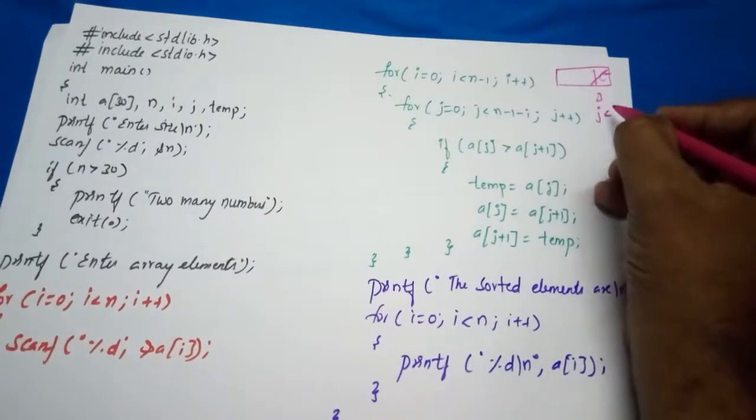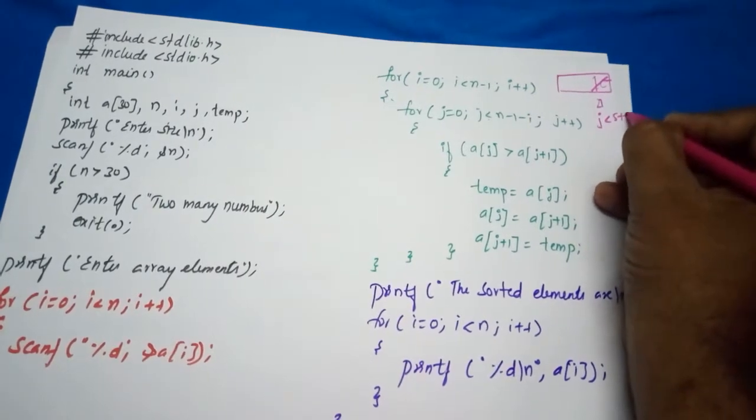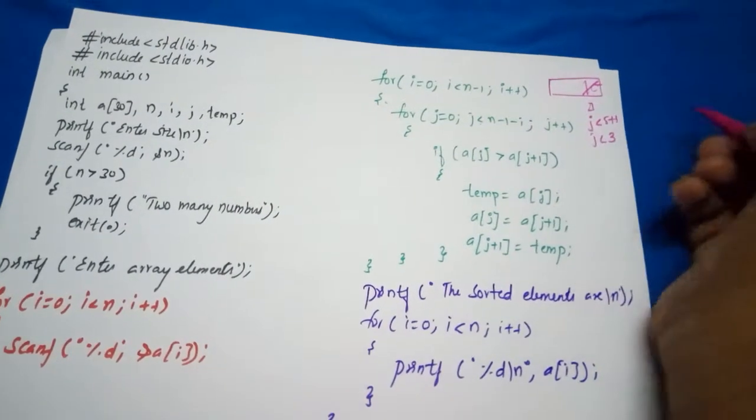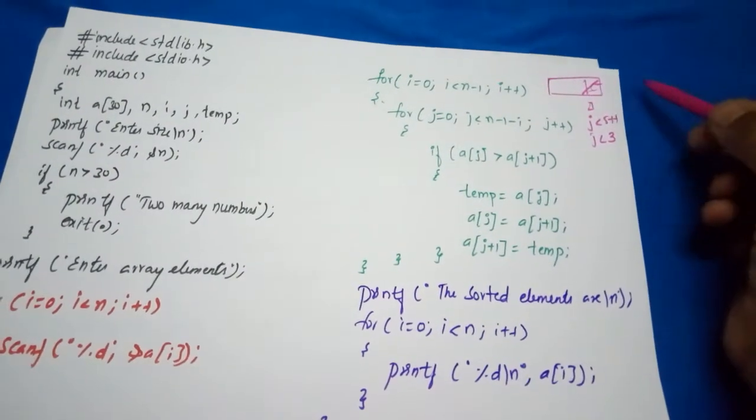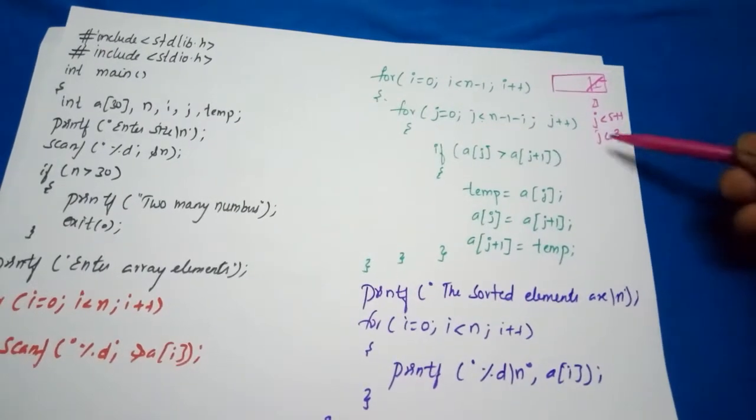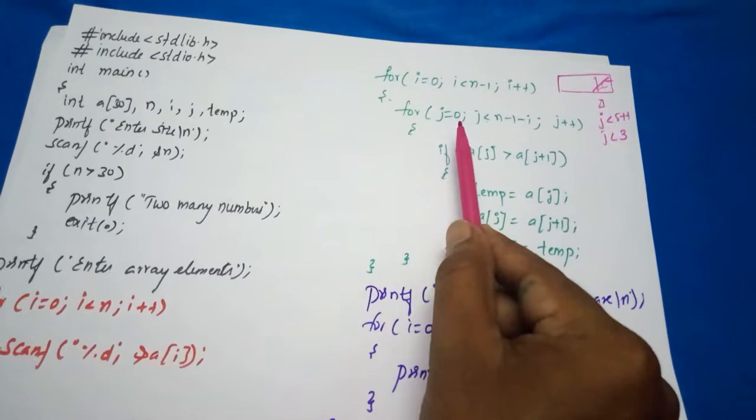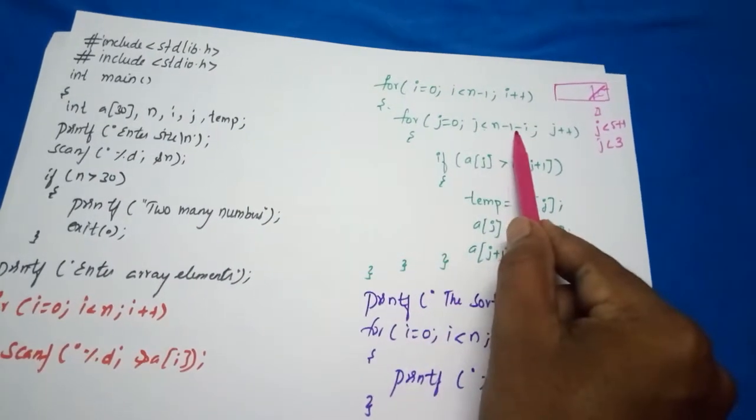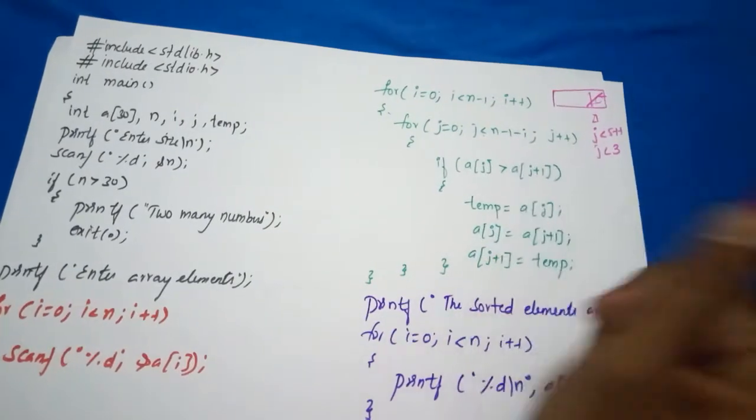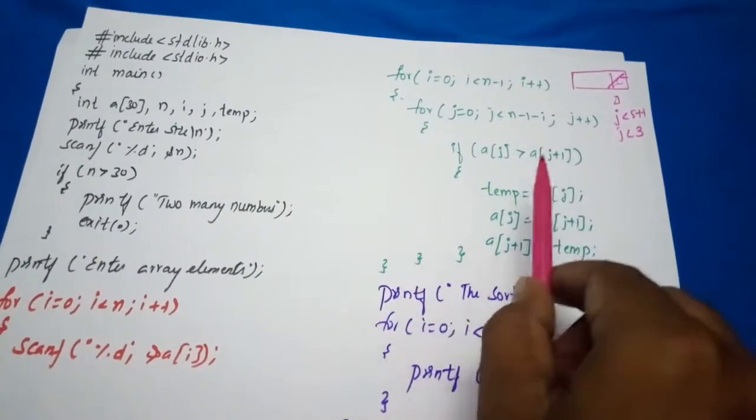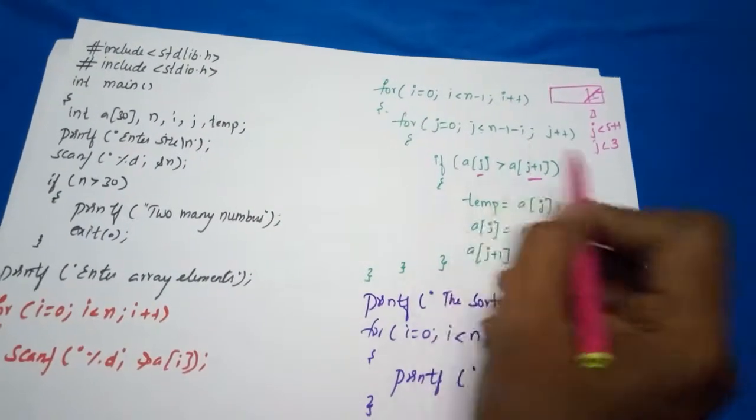So for example, if I say i is 1, then j will become what? j less than, for example n elements n is 5, so 5 minus 1 minus 1, so j is less than 3. So why we are saying 3? Because the last two elements are ignored. In that way, to ignore them we are doing like this. In selection sort we took here i plus 1, and in bubble sort we write here n minus 1 minus i. Here we write minus i. And this is similar: a of j is greater than a of j plus 1.